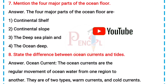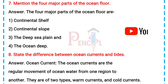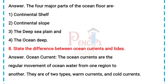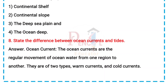7. Mention the four major parts of the ocean floor. Answer: The four major parts of the ocean floor are: 1. Continental shelf, 2. Continental slope, 3. The deep sea plain, and 4. The ocean deep.